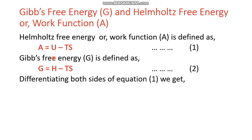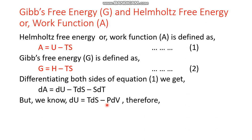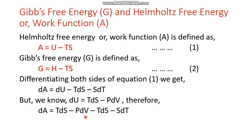The differentiation of A gives dA = dU - TdS - SdT. We know the value of dU from the fundamental equation: dU = TdS - pdV. Substituting this, the TdS terms cancel each other, and only the terms left are -pdV and -SdT. This way we get the third fundamental equation of thermodynamics for a closed system.